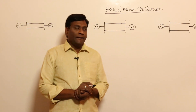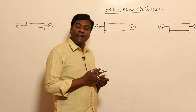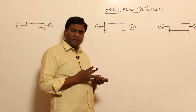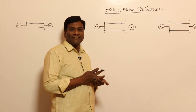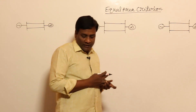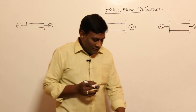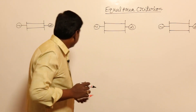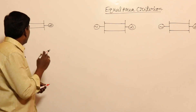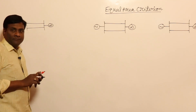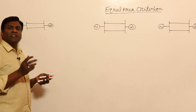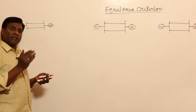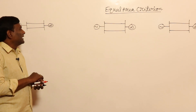In this session, let us see the Equal Area Criterion and its applications — different cases. For example, in this case, double circuit line. If it is a single circuit line, there is only one condition, which we are about to see.